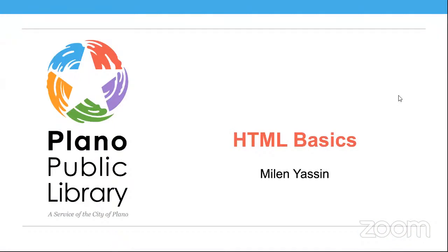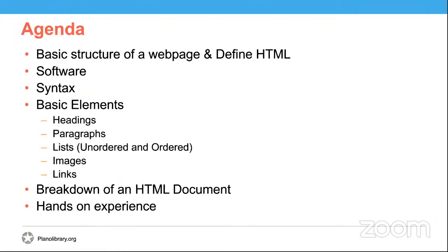Today, we're going to go over some of the basics of HTML. We'll start by going over the basic structure of a webpage and defining what HTML is. We'll look at the software that's needed, along with the basic syntax of HTML. We'll also look at some of the basic elements used: headings, paragraphs, lists, images, and links. I'll break down an HTML document line by line, and then demo what we've learned today using an online code editor.